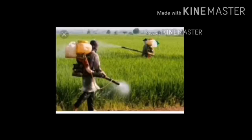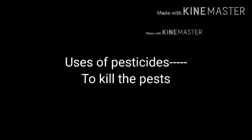Do you know what pesticides are doing? They kill the pest. Pesticides are chemicals used to kill pests which affect the production of crops and fruits.